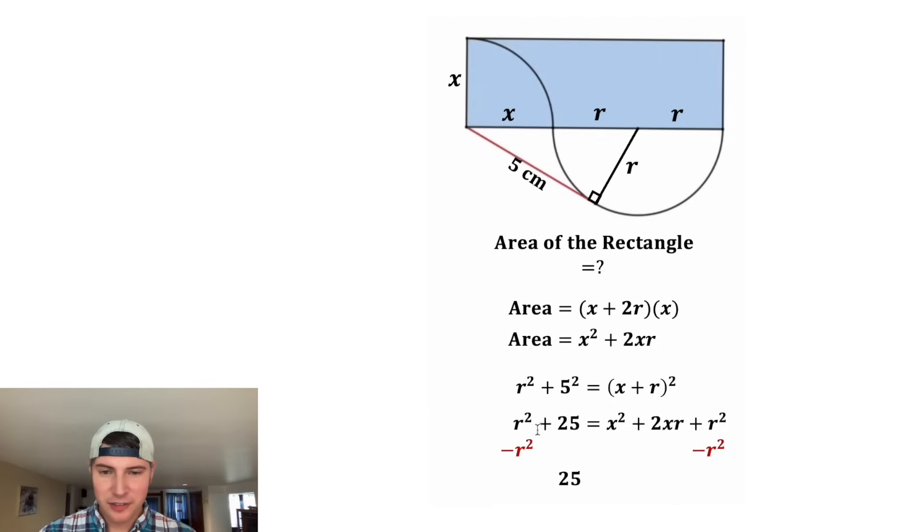On the left hand side we have 25, and on the right hand side we have x squared plus 2xr. And now we're pretty much done. We wanted to know what is the area of the rectangle, but we know that the area is equal to x squared plus 2xr, so we can plug that in right here. But we also know that x squared plus 2xr is equal to 25.